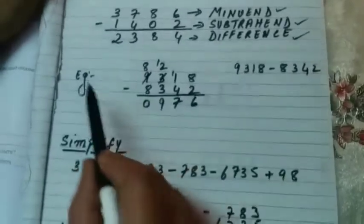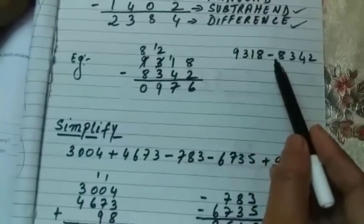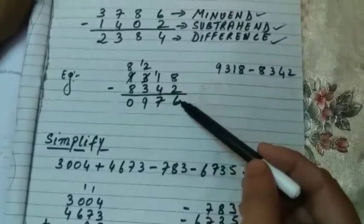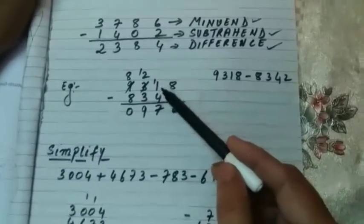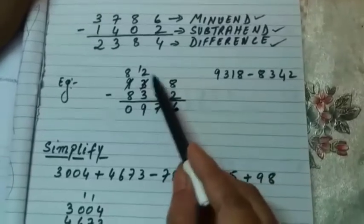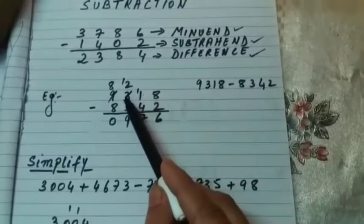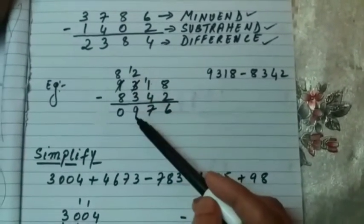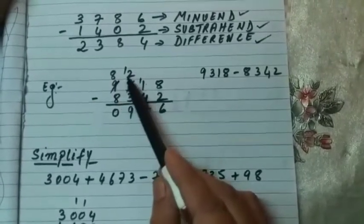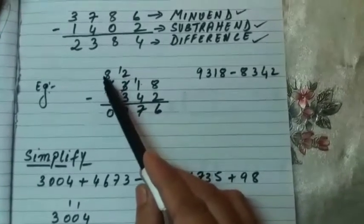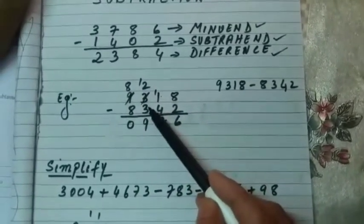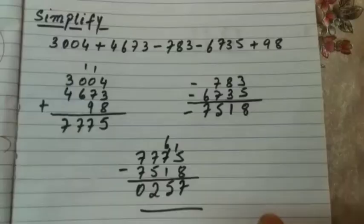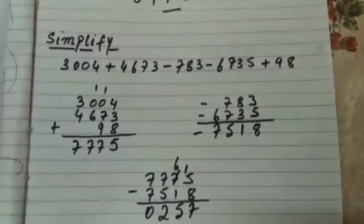I have taken one example: 9318 minus 8342. Eight minus two gives six. One minus four — we cannot subtract, so I borrowed one, making it eleven. Eleven minus four is seven. Two becomes twelve after borrowing; twelve minus three is nine. Eight minus eight is zero. So the answer is 0976.